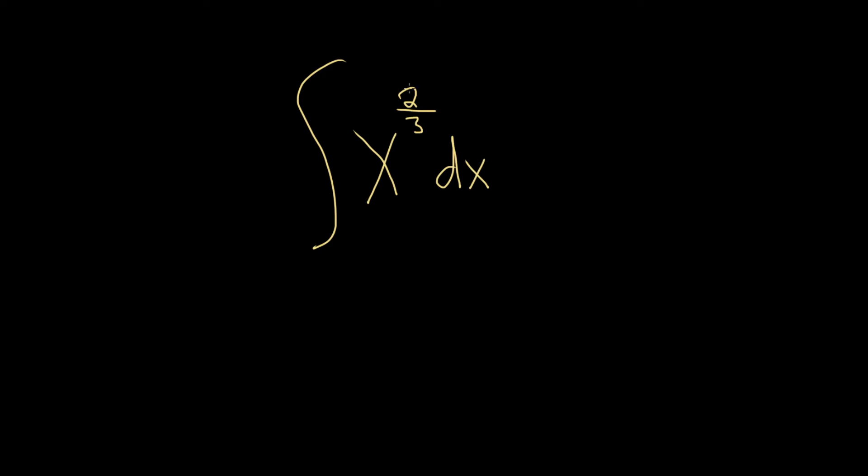The power rule says that we take this number and we add 1 to it, and then we divide by the result. So when we integrate this, we drop the integral symbol, we drop the dx.